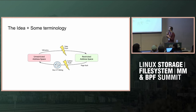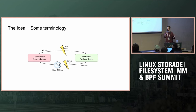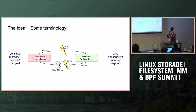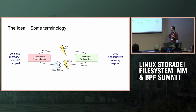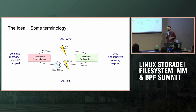Some terminology: there's the restricted address space, which doesn't have anything secret mapped, and the unrestricted address space is the other one. Memory that might have secrets in it we call sensitive memory, and non-sensitive is the reverse. We call the transition into the restricted address space ASI enter — a bit like VM enter, where you're entering a new domain.